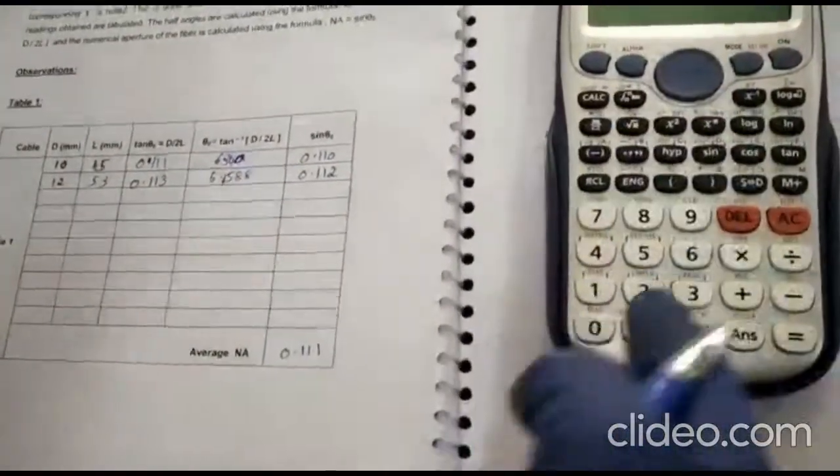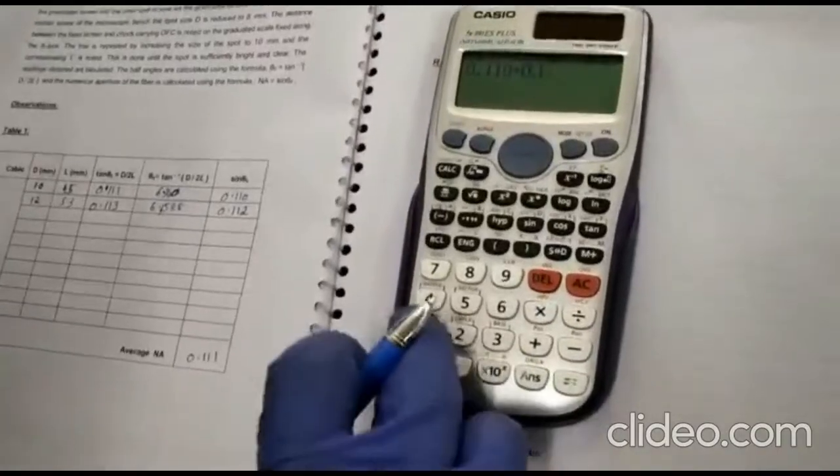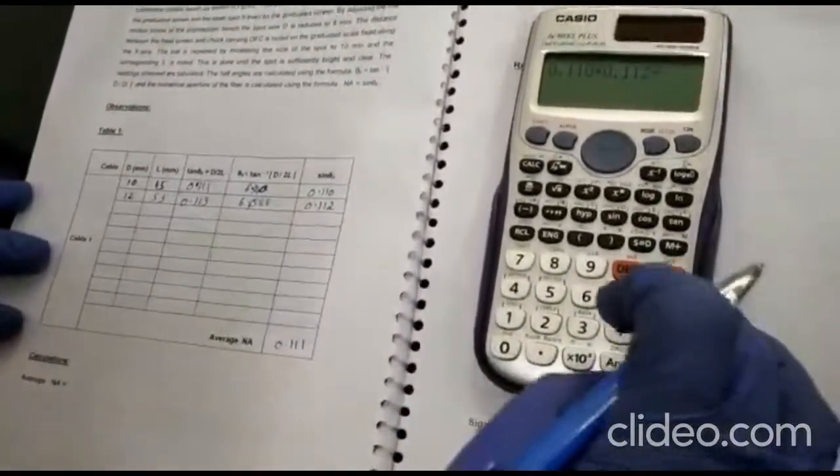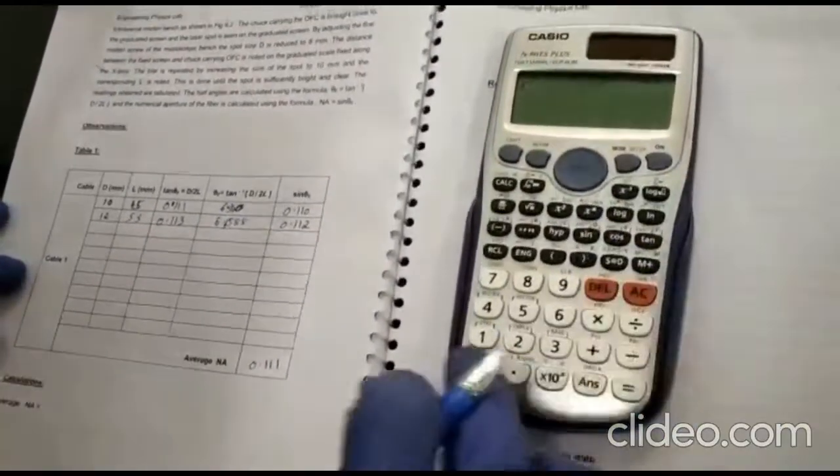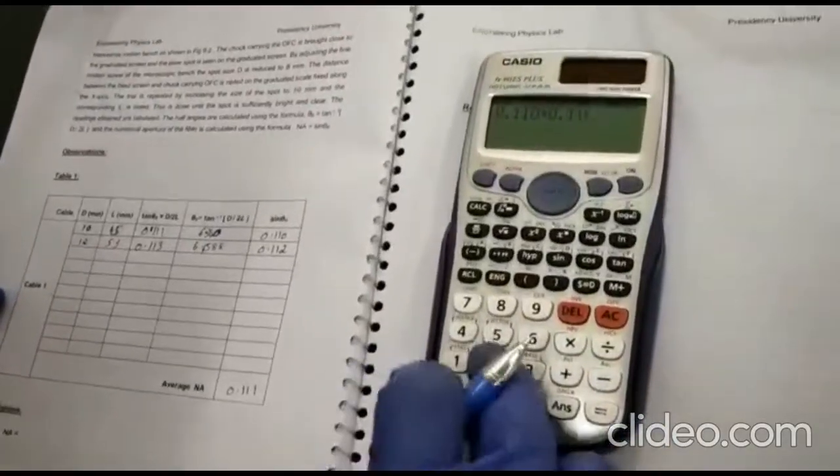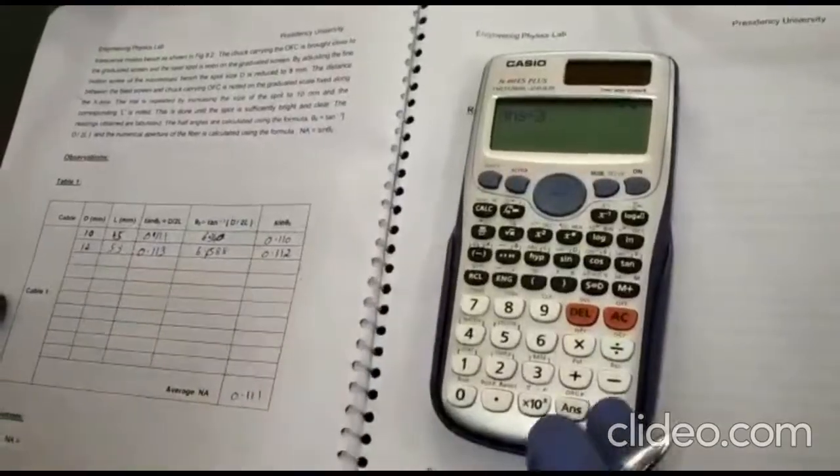That's, you have to add all that. I will just show you how to do it. 0.110 plus 0.112 divided by total number. So in this case, 0.110 plus 0.112, that answer divided by 2.